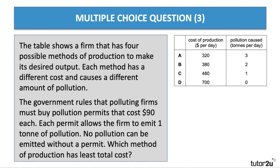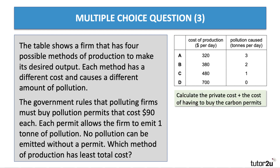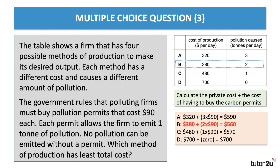This is about pollution permits — firms have to buy permits for each tonne of pollution they cause. You multiply the amount of pollution caused by $90 to get the cost of buying the carbon permits. Option A has a total cost of $590. Option B: $560. Option C: $570. Option D is the highest cost — no pollution but high production costs at $700. So the method of production with the least total cost is Option B.